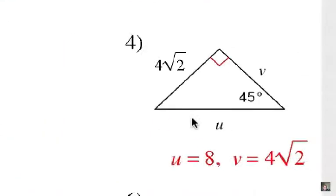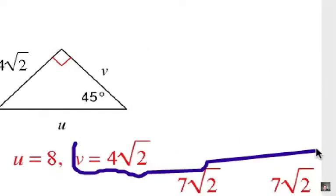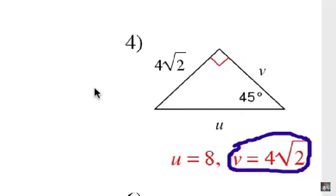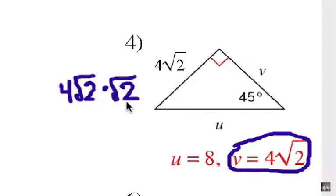Alright, now let's look at number 4. Notice that the leg is labeled 4 radical 2, so this other leg V must also be 4 radical 2. Now, to get the hypotenuse U, we're going to take 4 radical 2, which is the leg, and we're going to multiply it by radical 2. The hypotenuse is always radical 2 times longer.